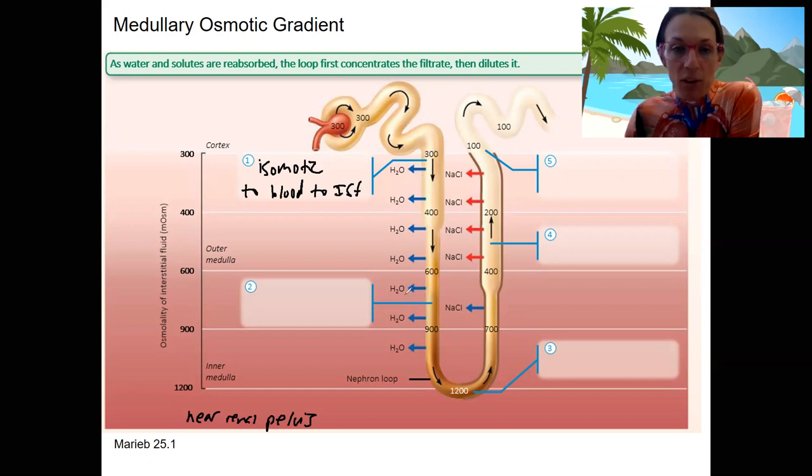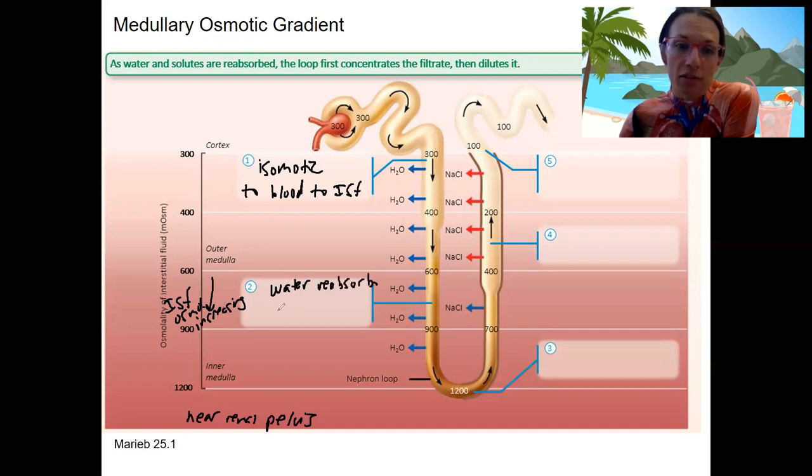As we start to drop down through the outer medulla, inner medulla, deeper into the medulla, the osmolarity in the ISF starts to go up. ISF osmolarity increases as we go down physically. That's going to result in water reabsorption down that osmotic gradient. At this point, the filtrate entering is like 500. As it enters the renal medulla that is 600, water flows out down its osmotic gradient due to the concentration in the medulla itself.